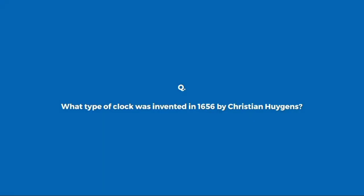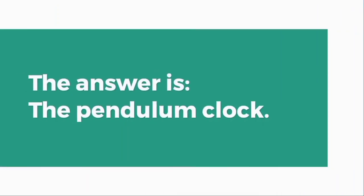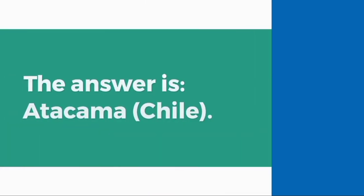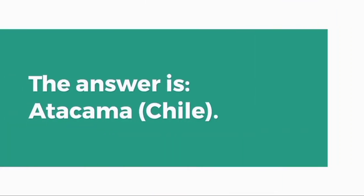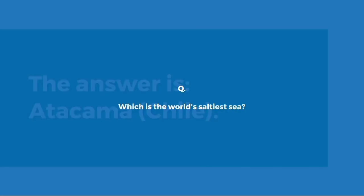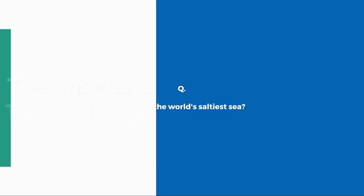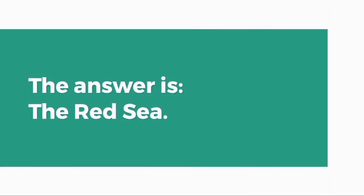What type of clock was invented in 1656 by Christiaan Huygens? The pendulum clock. In which desert is the world's driest place? Atacama, Chile.